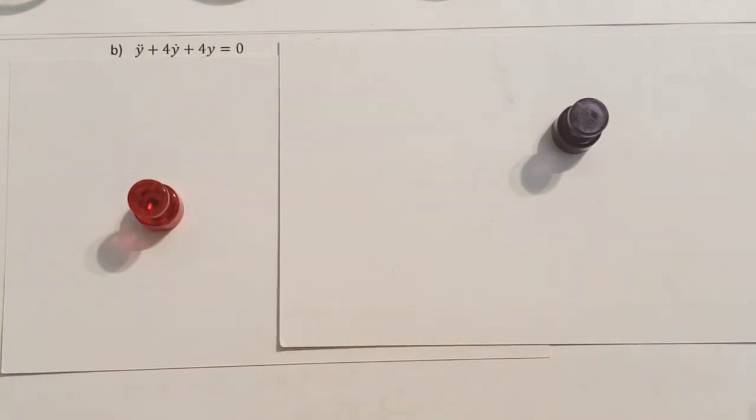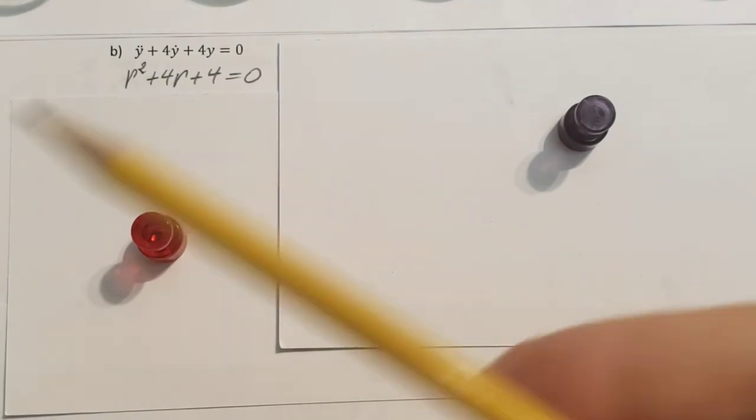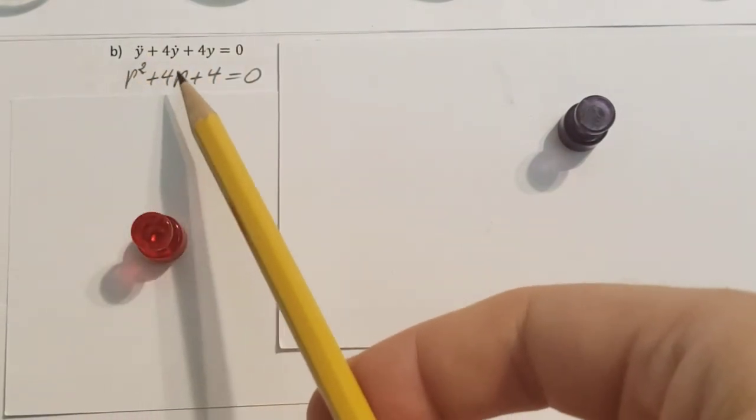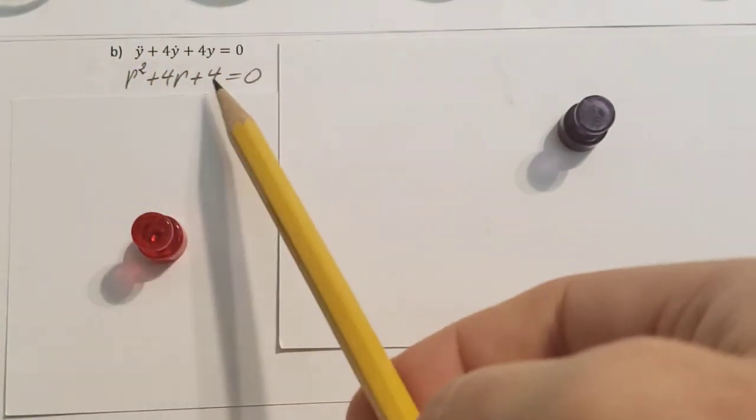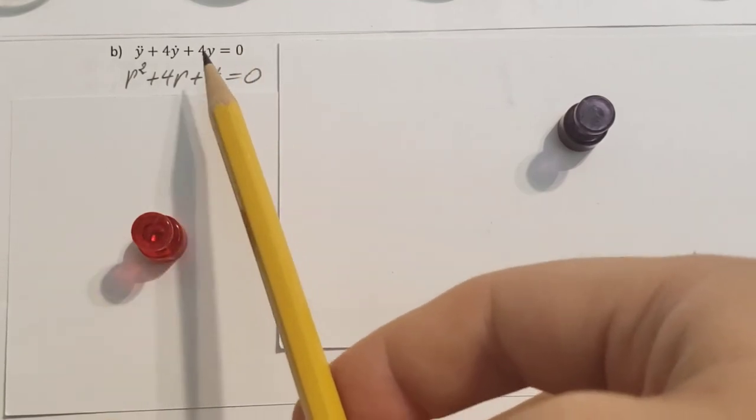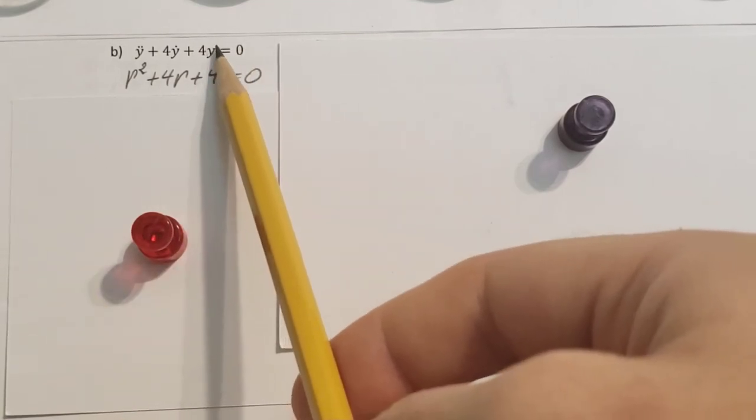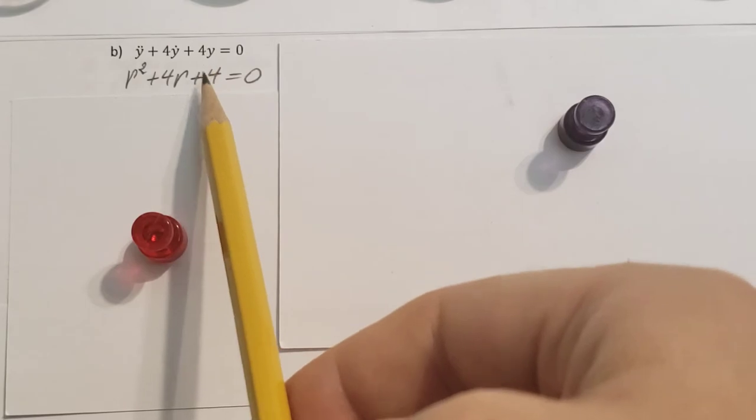So let's go ahead and find our characteristic equation. There it is: r squared plus 4r plus 4 equals 0. Make sure you don't accidentally put an r here too just because there's a y, okay? So only a 4 here.